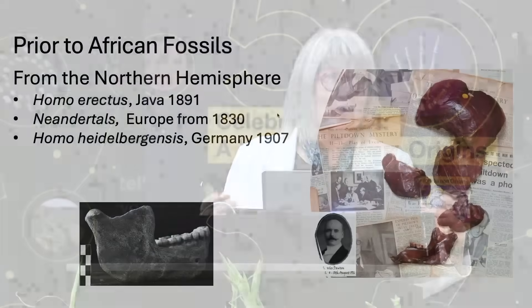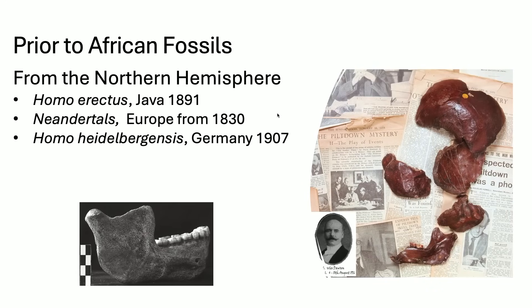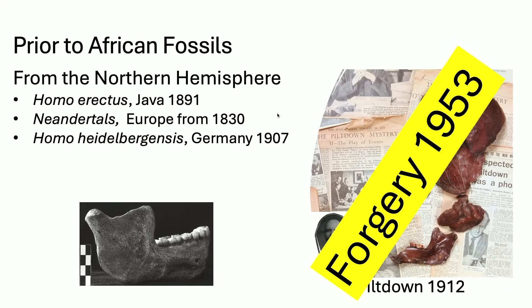Prior to African fossils, in the northern hemisphere we knew about Homo erectus, Neanderthals, and Homo heidelbergensis. Britain had their own fossil that you don't hear about today — Piltdown. Several pieces of a human skull were found combined with what turned out to be an orangutan mandible, which was a hoax. It wasn't even found to be a forgery until 1953. I remember learning about it in grade school in Michigan — I don't know whether to be happy it was in the textbook, or sad because the textbook must have been really old.